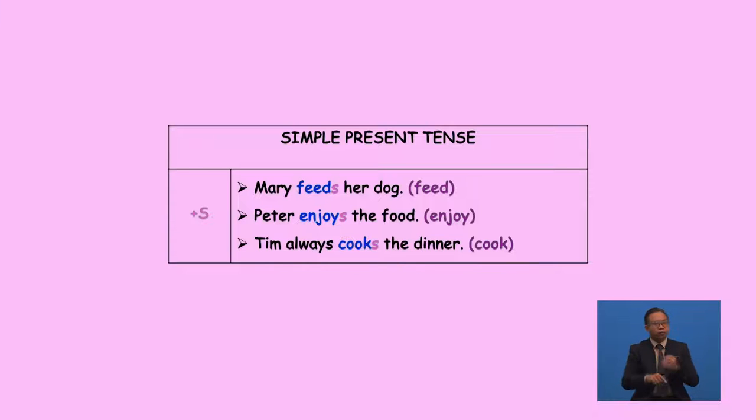For example: 'Mary feeds Peter and Joyce.' 'Tim cooks.' That's as easy as A, B, C. But wait — not all words for the third person singular he, she, it just add S. Some might need to add ES too.